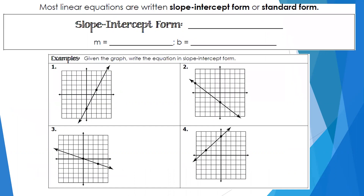The first thing we're going to talk about today is slope-intercept form, and we've hopefully heard slope-intercept form before in Algebra 1. Slope-intercept form is when your equation is in the form y equals mx plus b, where lowercase m is your slope, and lowercase b represents your y-intercept, or where the line crosses the y-axis.